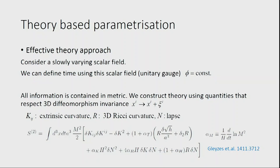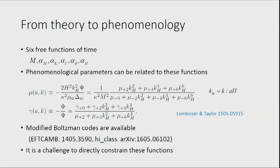The Planck paper also tried theoretical-based parameterizations. Using a very phenomenological two-parameter approach is what I've described, but there is a way to parameterize directly from the action. That gives around six free functions of time instead of two functions of space and time. There are modified Boltzmann codes available to play with these parameters and predict everything, but constraining six free functions is a very challenging task.